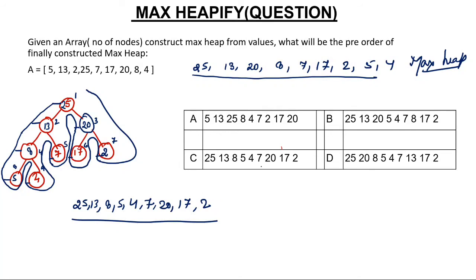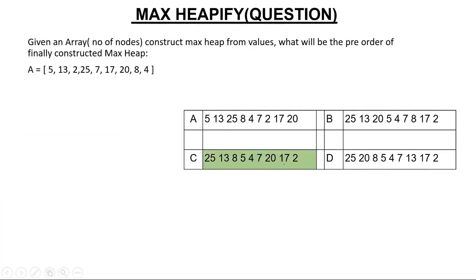So the answer is C — 25, 13, 8, 5, 4, 7, 20, 17, 2 — and C is the correct answer. I hope you know how to calculate pre-order and post-order traversals. My job here was to explain the max heap and min heap property and how to build them.